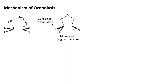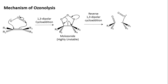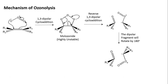The molozonide, being unstable, will undergo a reverse 1,3-dipolar cycloaddition to generate a ketone or an aldehyde and a dipolar compound, known as a carbonyl oxide (nitrone). The dipolar compound will rotate by 180 degrees and will then attack the carbonyl compound — just like ozone attacked the unsaturated alkene, this dipolar species will attack the unsaturated carbonyl compound, which may be an aldehyde or a ketone. When this happens, there will be another 1,3-dipolar cycloaddition.